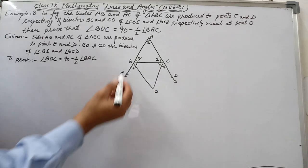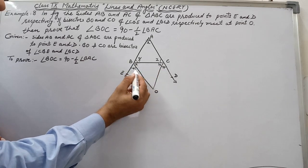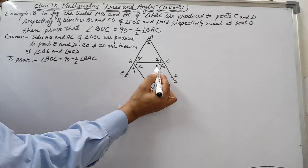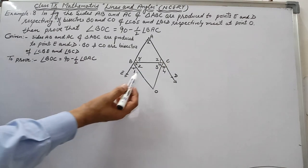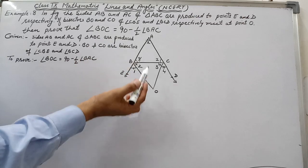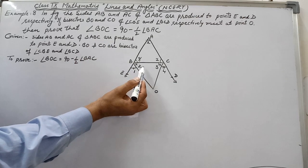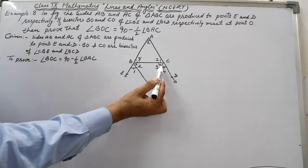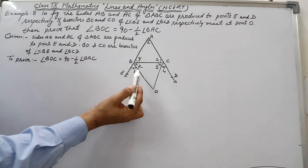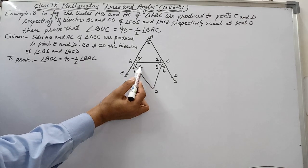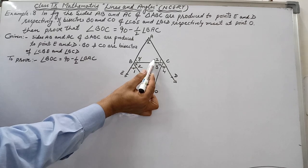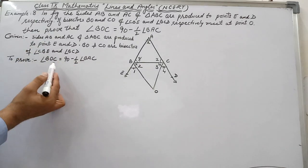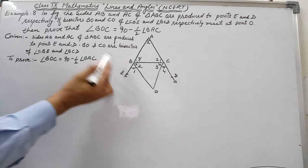Since BO is the bisector of angle CBE, angle 1 is equal to angle 2. And since CO is the bisector of angle BCD, angle 3 is equal to angle 4. To prove this, our first step will be to write angle 2 in terms of Y and angle 3 in terms of Z, and then apply the angle sum property in triangle BCO. We will also write the given and to prove, and in the proof write that angle BOC equals 90 minus half of angle BAC.